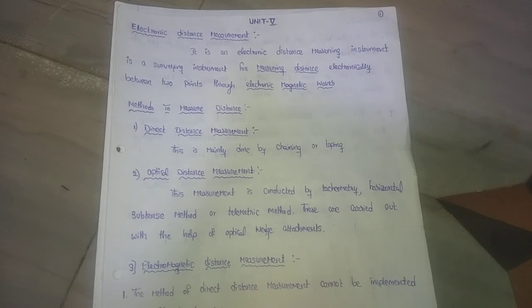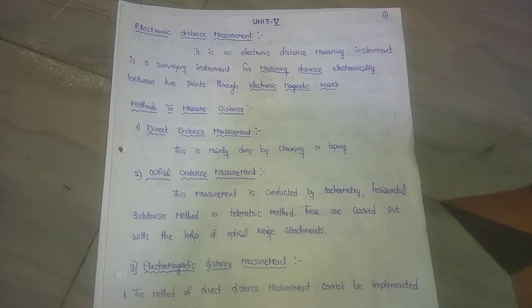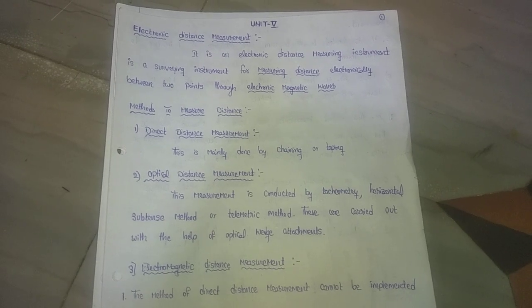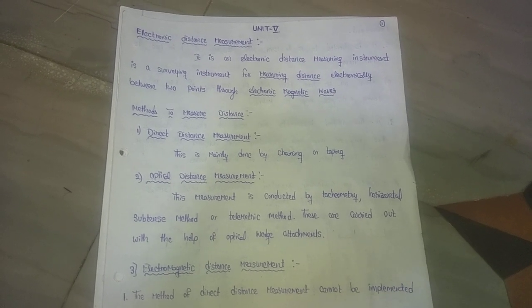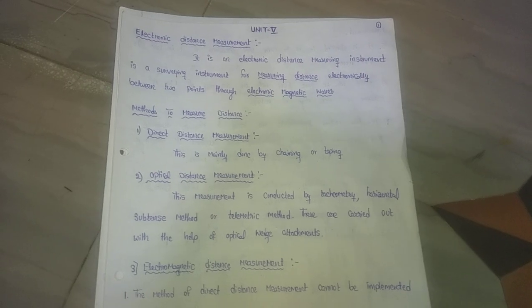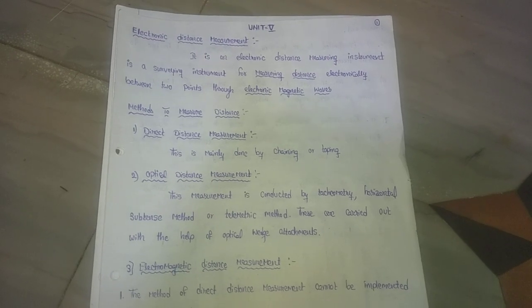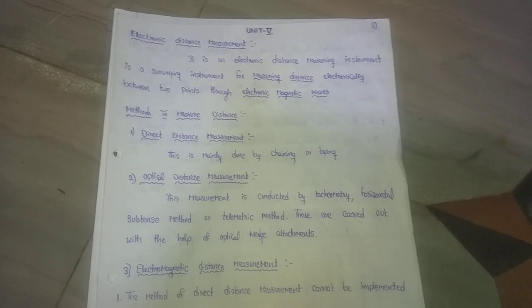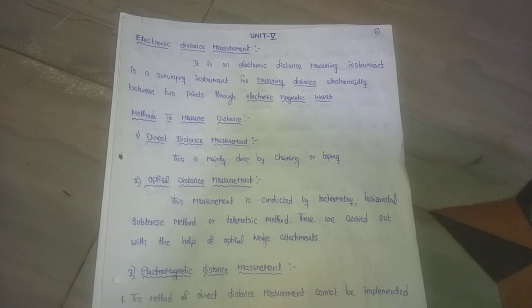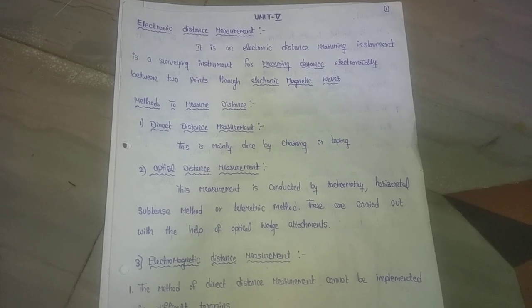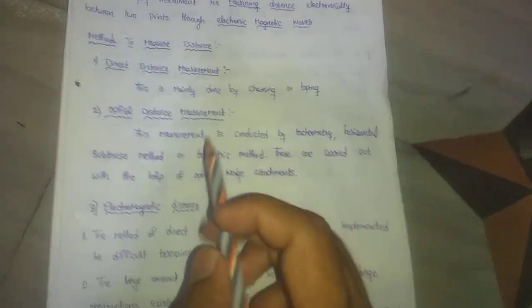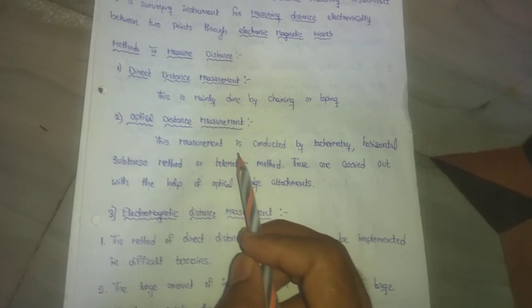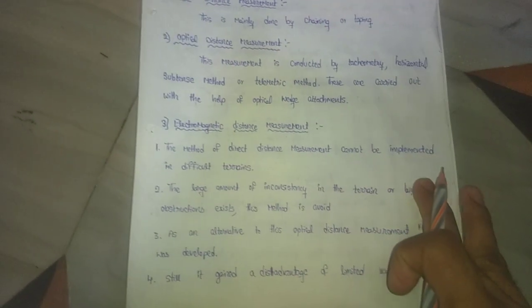By using a theodolite, by observing crosshairs and using the telescope, we focus on the target point and by using a formula, we can easily measure the distance between two points. That is optical distance measurement.